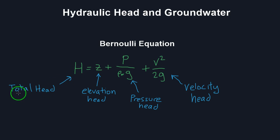So H is the total head or the total energy of a body of water. Z is the elevation head which represents the elevation of that body of water and sort of the potential energy of that water at a certain elevation above a datum.